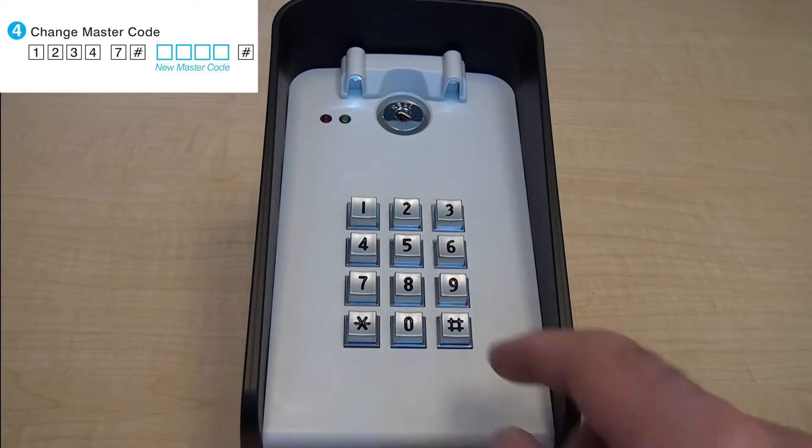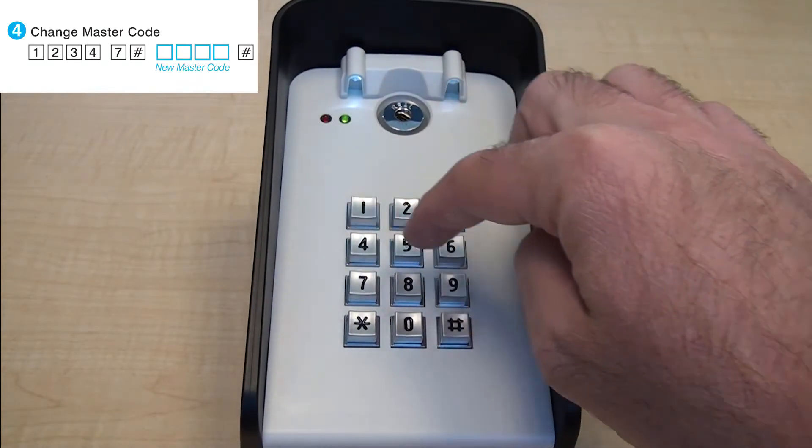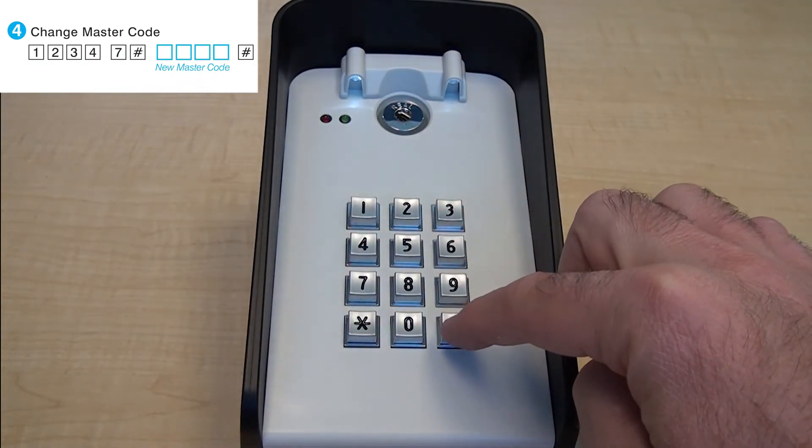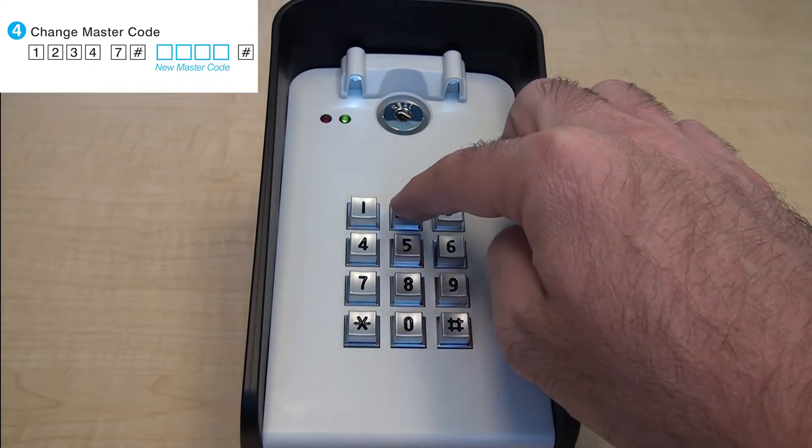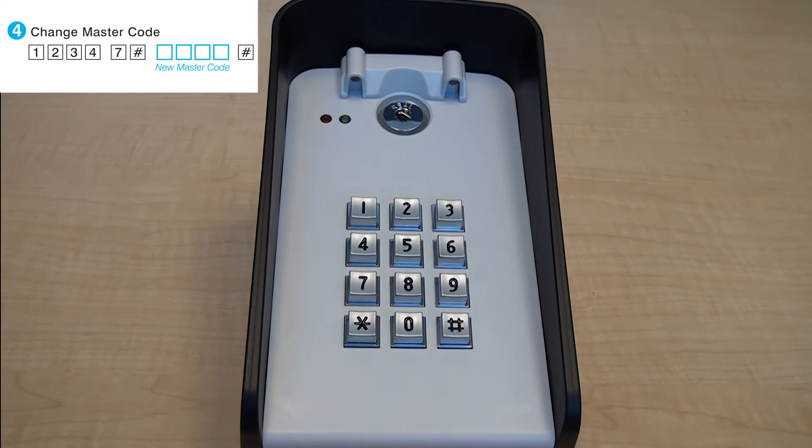To change the master code, use the current master code to enter programming mode. Press 7 pound to enter the change master function in the keypad. Enter the new master code followed by the pound sign. When finished, press the star button twice to exit programming mode.